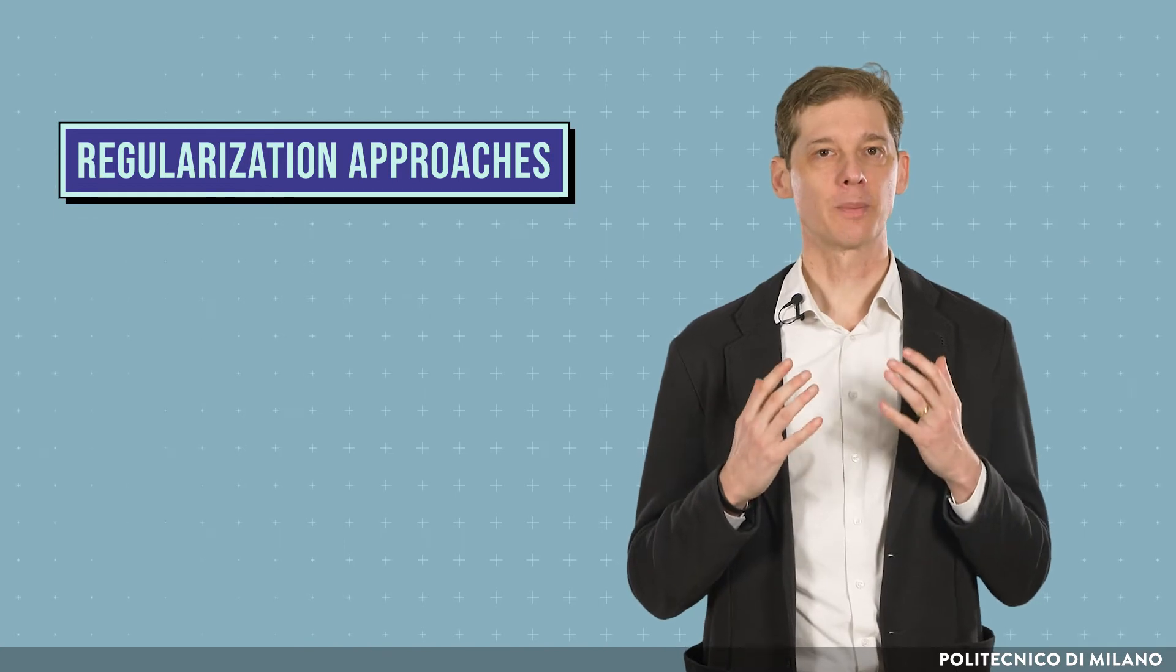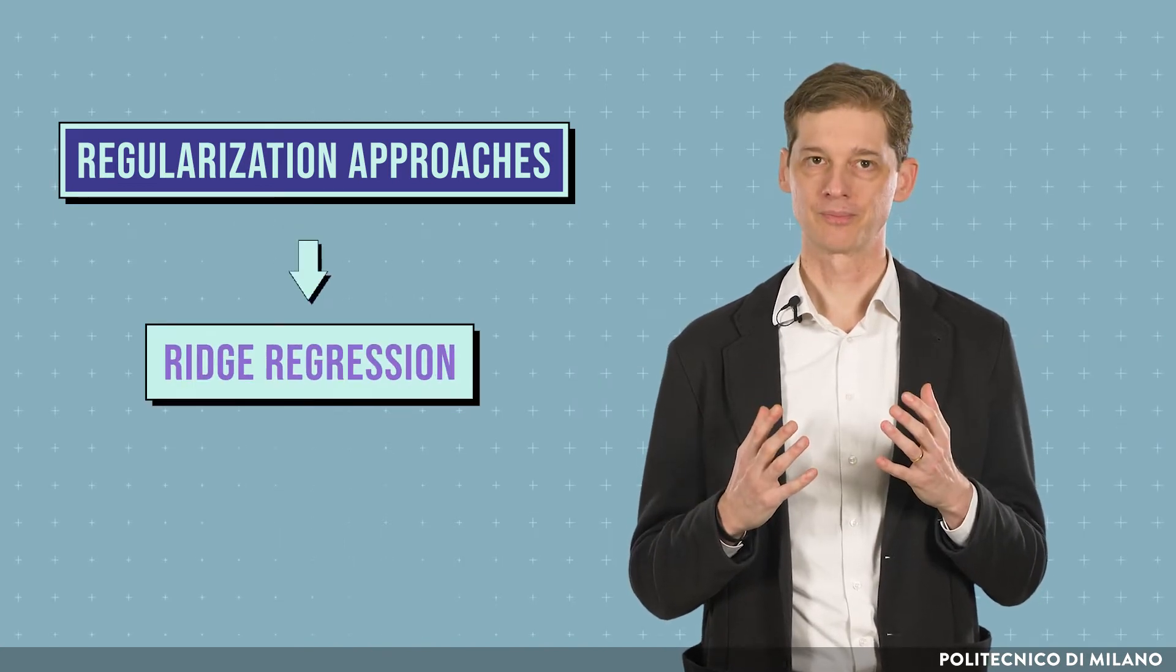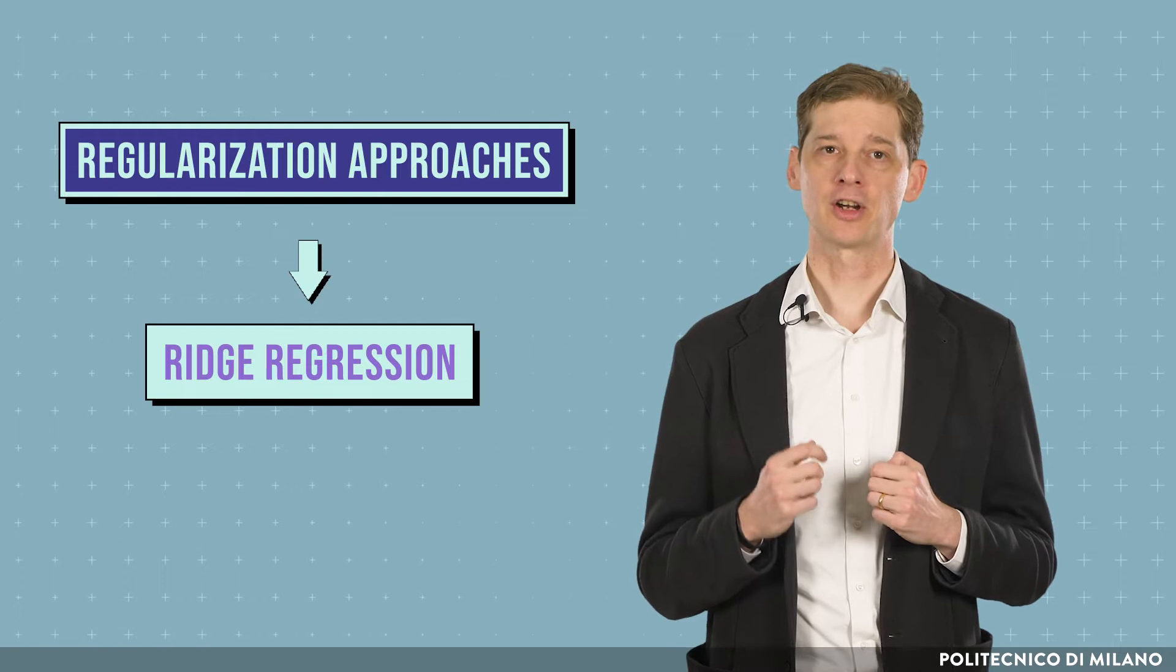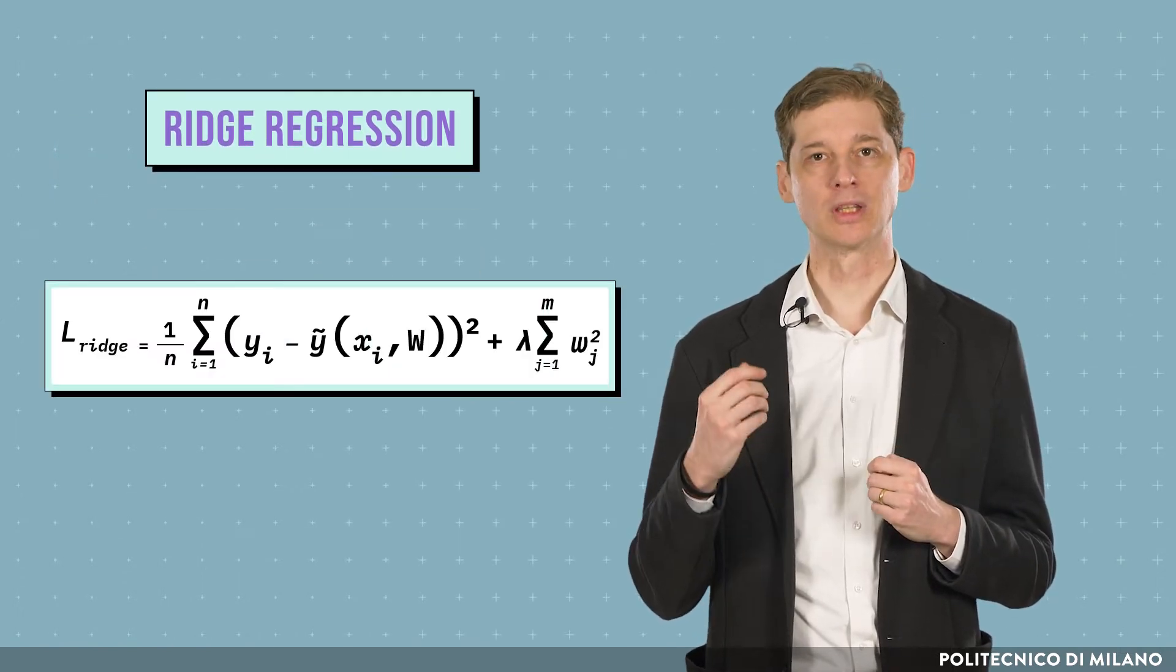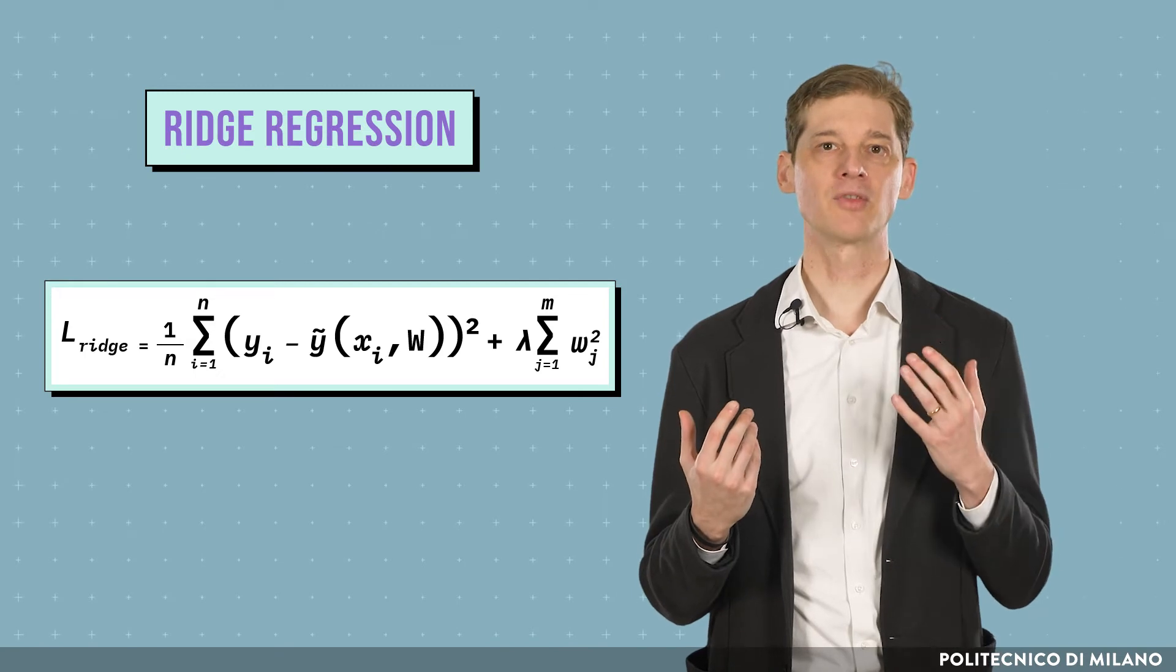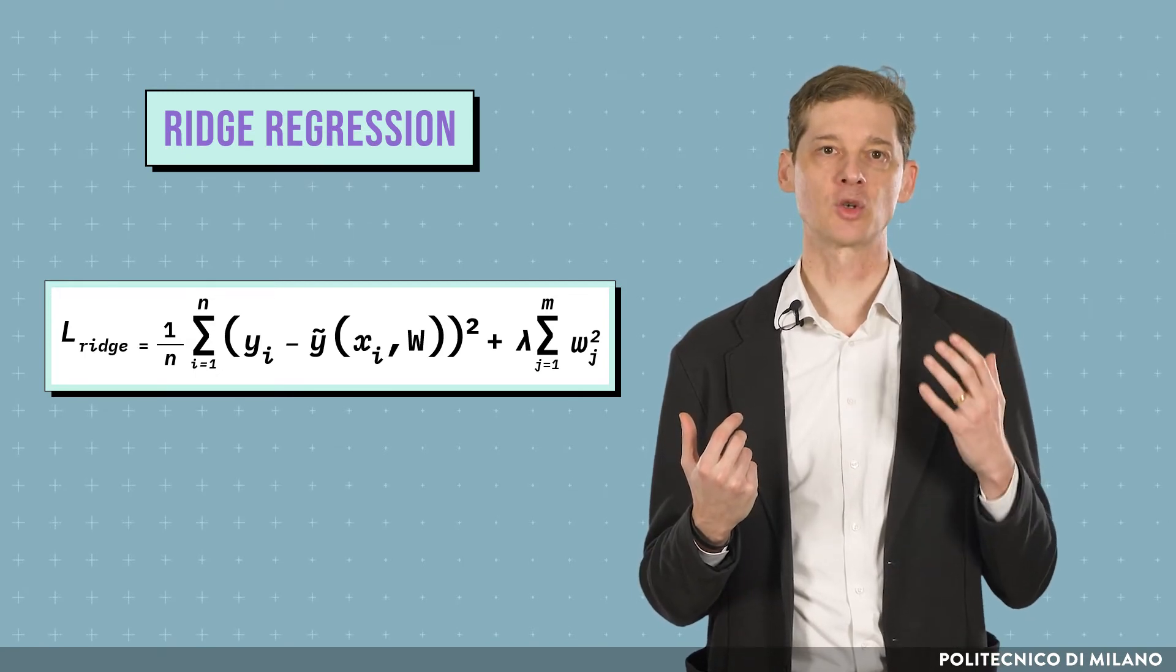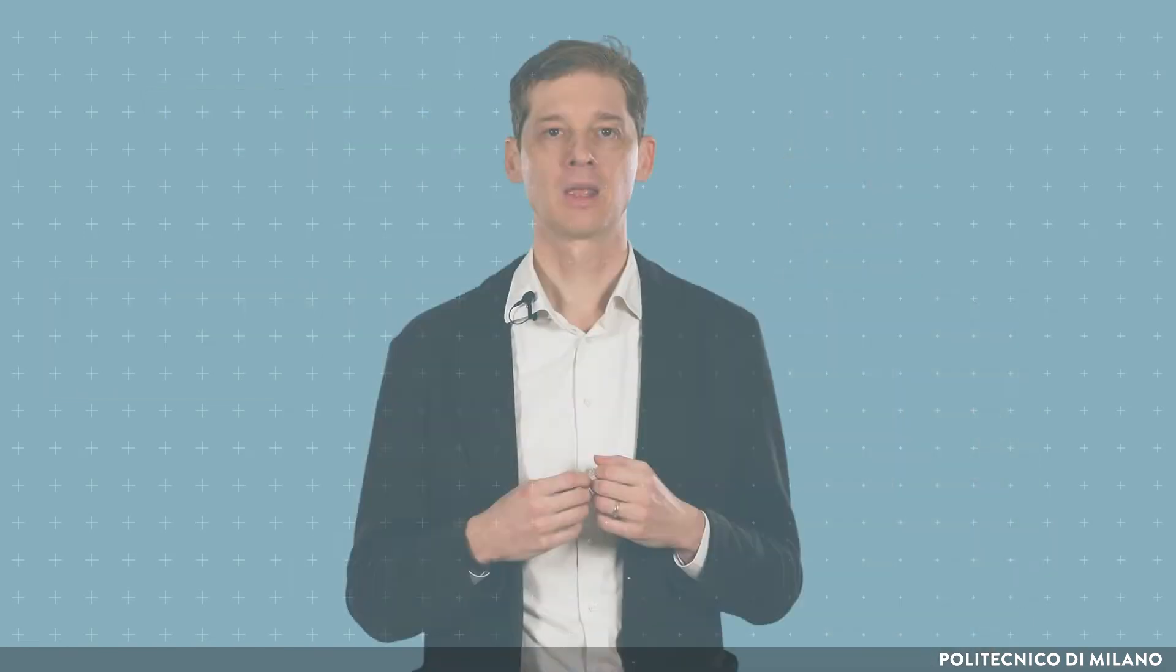An example of a regularization approach is ridge regression. Ridge regression is a linear regression method, where the loss function is computed as the sum between the mean square error and the sum of the parameter squared multiplied by a regularization parameter lambda. By increasing the value of the regularization parameter, we get a linear model with small parameter values, which correspond to smoother functions.